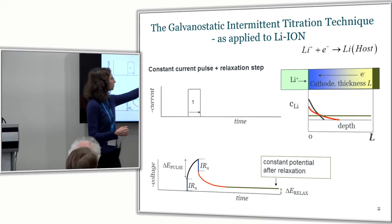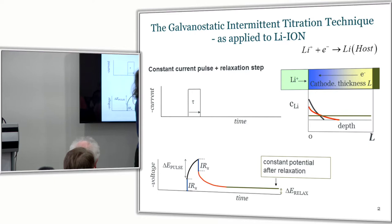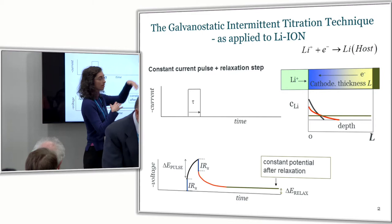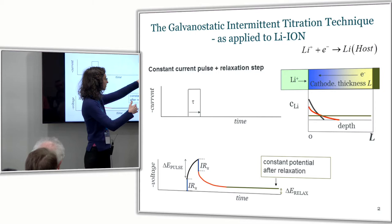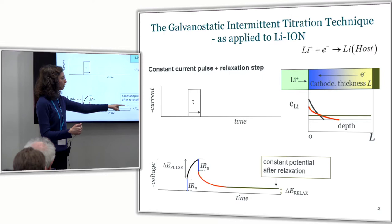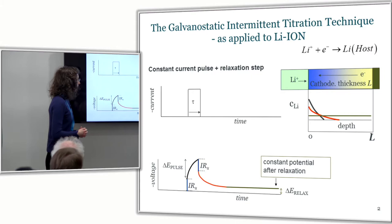As we apply this current pulse, we induce a variation of the surface concentration of our species. For lithium-ion batteries, for a negative current pulse, we will be inserting some lithium ions into the host. So that produces a local change in concentration. But then this concentration change spreads out through the whole electrode. And at the end of the relaxation, we end up with a constant concentration change throughout the lithium insertion electrode. So that's why at the end of the relaxation, we observe that the final potential is different from the initial potential, which gives the equilibrium potential of the electrode.